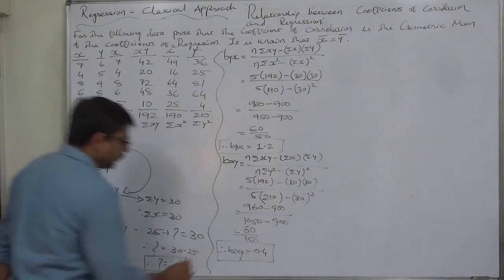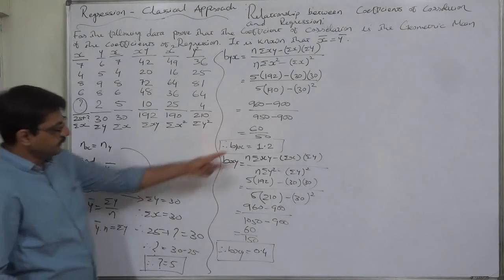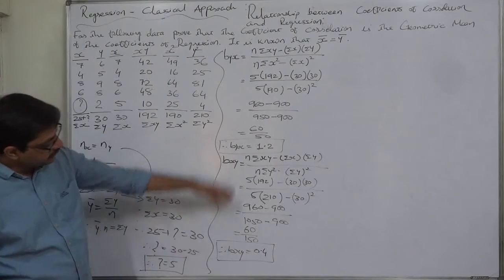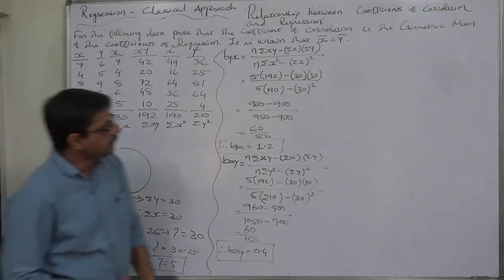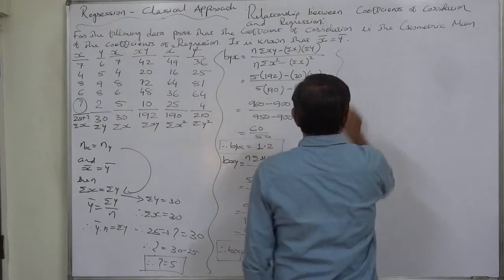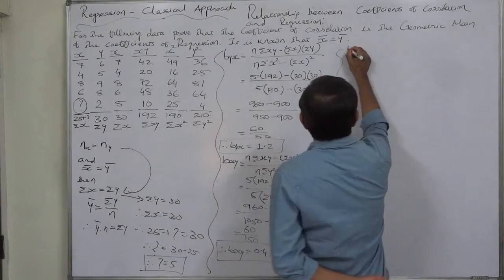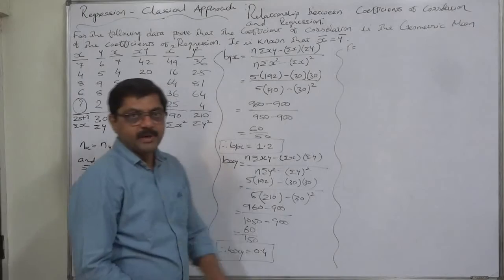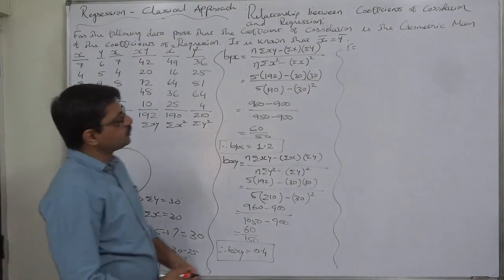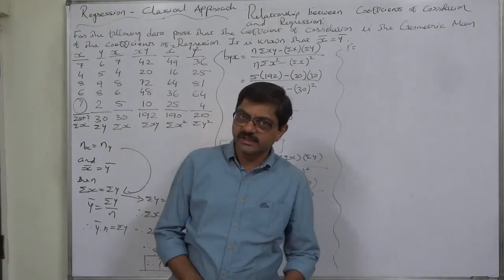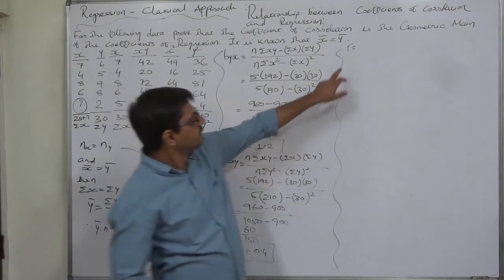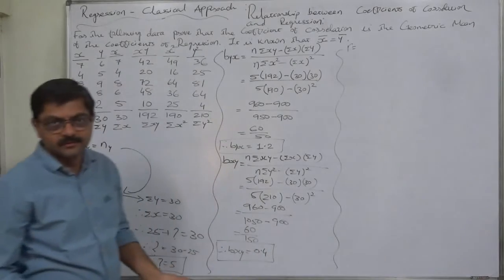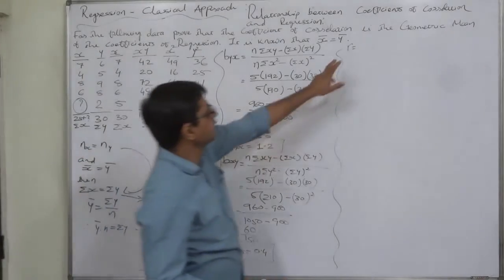Both regression coefficients are positive, so the type of relationship is consistent — there is no error. The numerator is the same in both cases. Now let us find the coefficient of correlation r (also written as ρ), which is recognized as R in most schools and colleges.